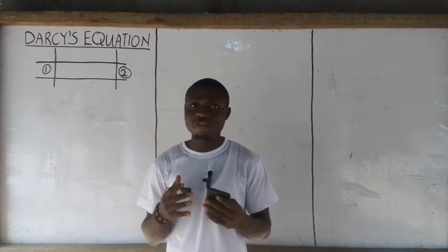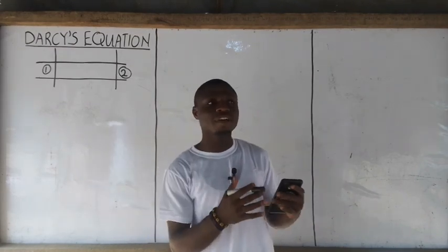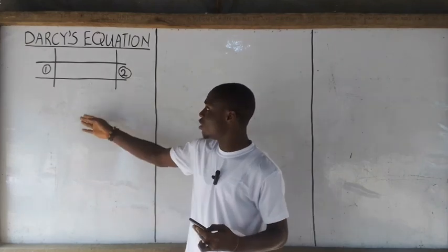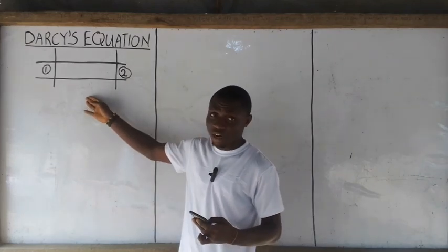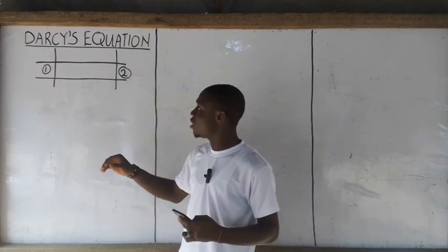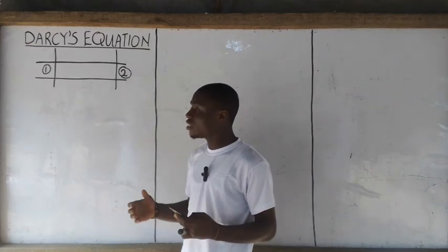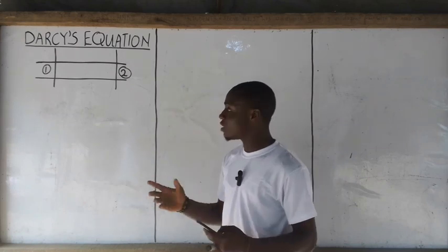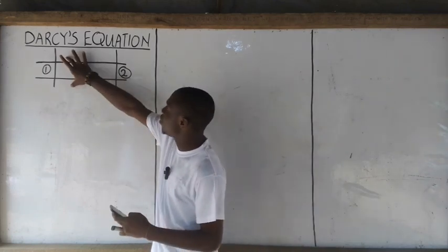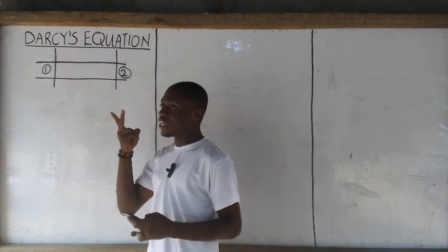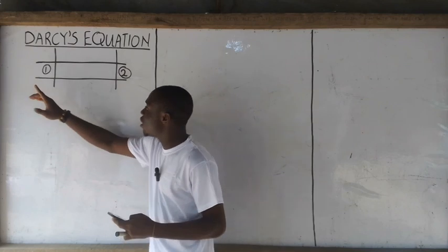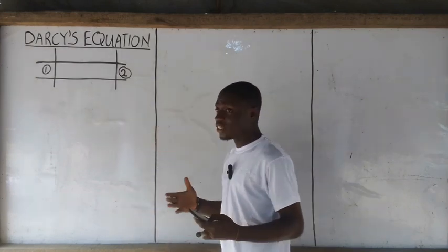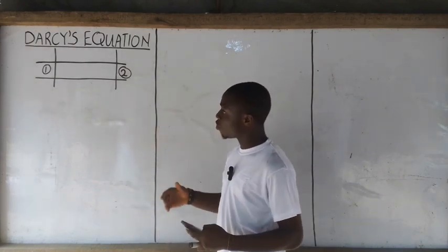Your first task to derive the Darcy equation is to draw out these diagrams. As you can see, this is illustrating a pipe having two entrances — Section 1 and Section 2.